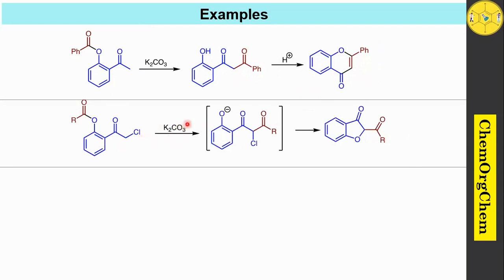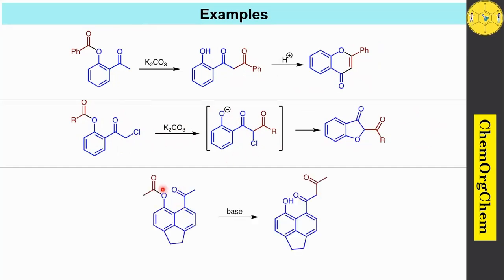In another cyclization example, when you use potassium carbonate with this starting material, it readily undergoes Baker-Venkataraman rearrangement — here you see this acyl group transferred into this carbon. Then this O-negative charge readily attacks this carbon having chlorine as a leaving group, which readily produces this five-membered ring system. This is how the ortho-acyloxy group is rearranged to produce the corresponding 1,3-dicarbonyl compounds.